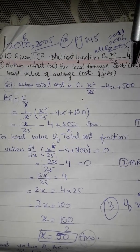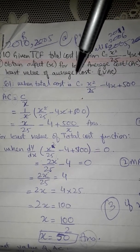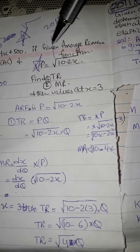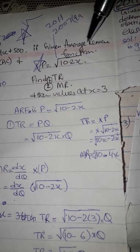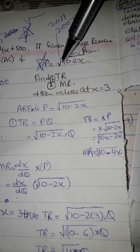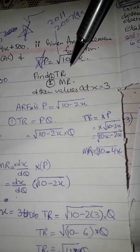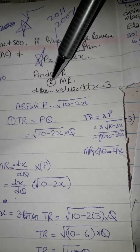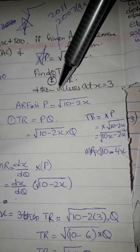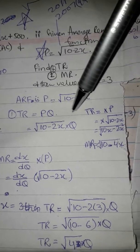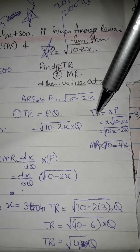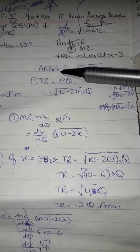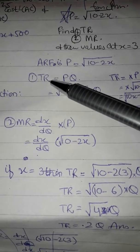LVAC stands for least value of average cost. The second part of the question gives average revenue function p equal to square root of (10 minus 2x). Find total revenue TR, marginal revenue MR, and their values at x equals 3. You can find the same solution for TR and MR in the book.